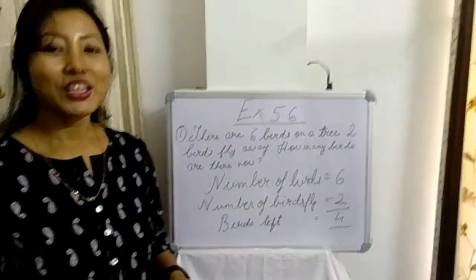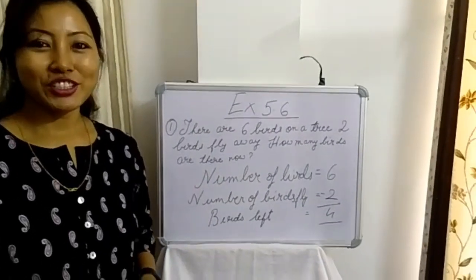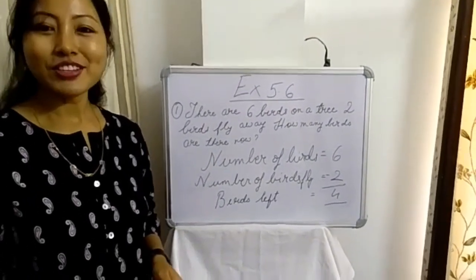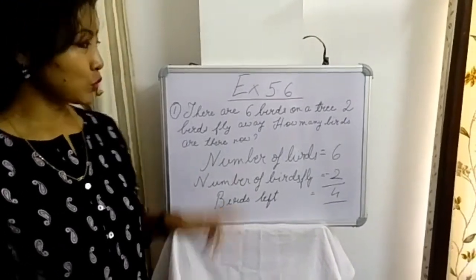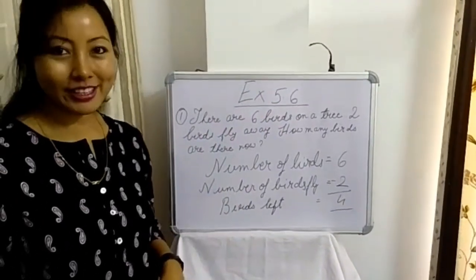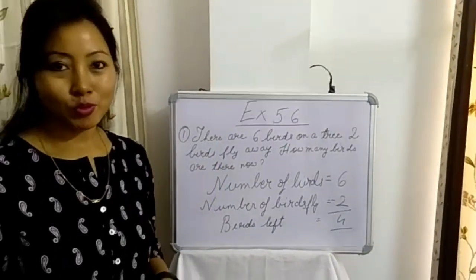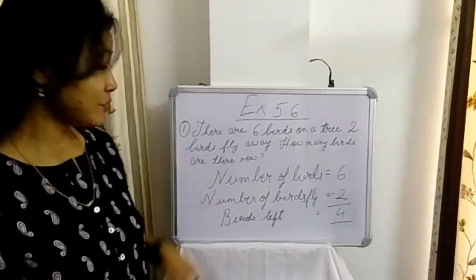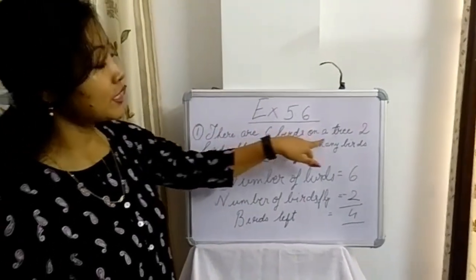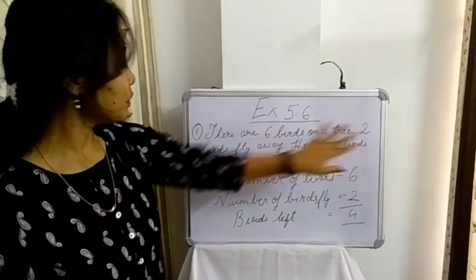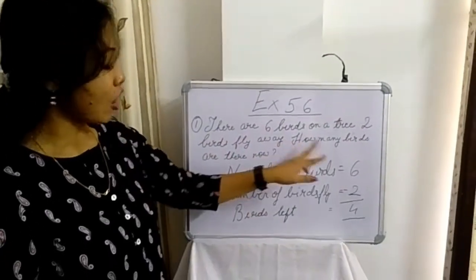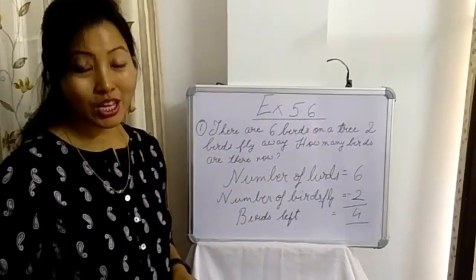Well children, today I am going to teach you word problems on subtraction. In your maths book exercise 5.6, question number 1 is given: there are 6 birds on a tree, 2 birds fly away. How many birds are there now?